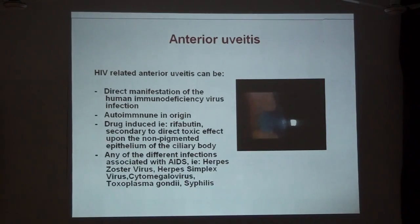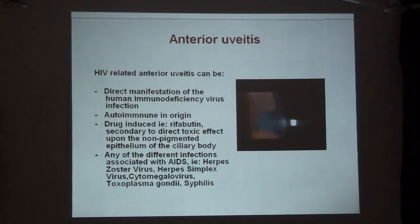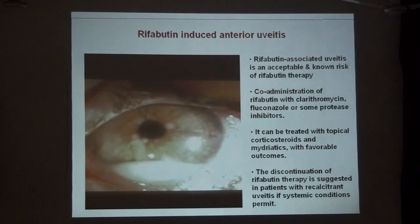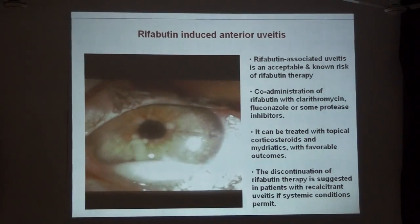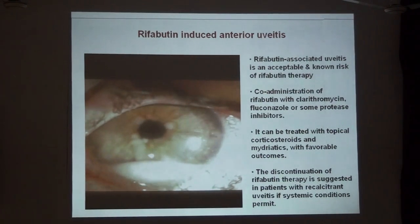There are several causes of anterior uveitis in HIV patients. It could be from a direct manifestation of HIV virus infection, autoimmune in origin, or drug-induced. Drugs like rifabutin, when used in HIV patients co-infected with tuberculosis — especially Mycobacterium avium intracellulare complex — particularly when co-administered with clarithromycin, fluconazole, or other protease inhibitors, can cause uveitis. It responds well to topical corticosteroids and mydriatics, but if unresponsive, it may require discontinuation of the drug.